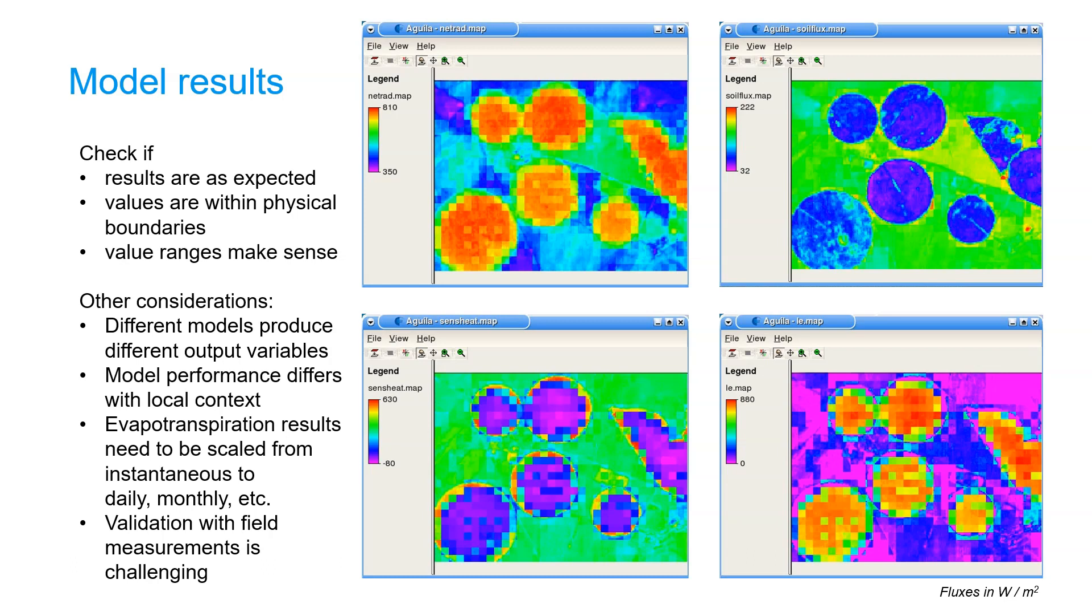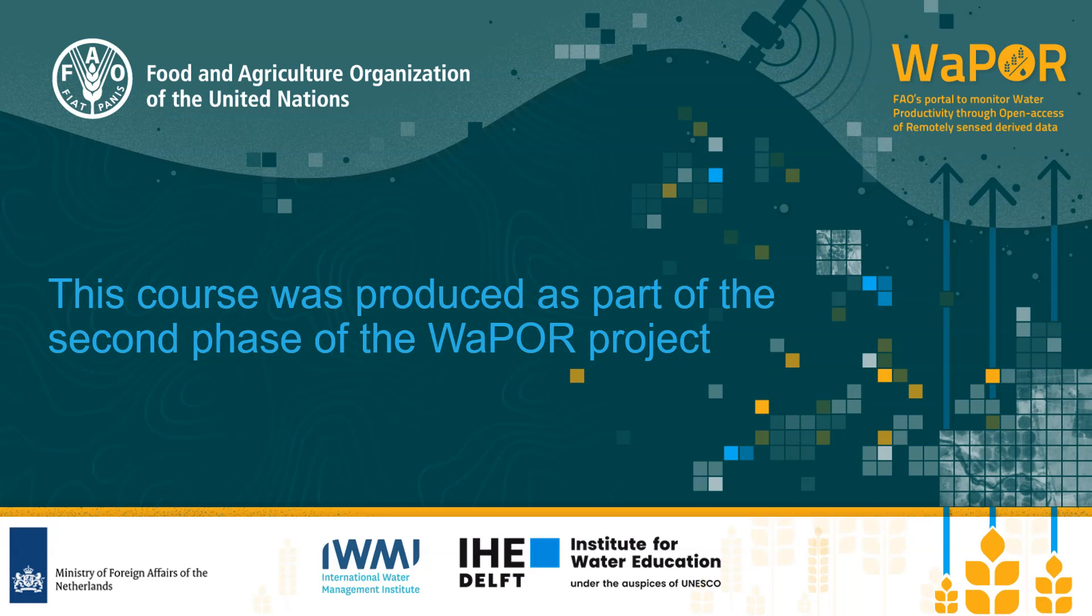Finally, validation of your model results with field measurements is challenging. First of all, there are not many field measurements commonly available. Secondly, your model produces pixels which are quite coarse compared to field measurements at specific locations in the field. Also methods to measure evapotranspiration can be quite tricky and have their own uncertainty.